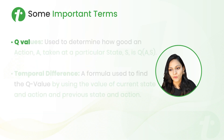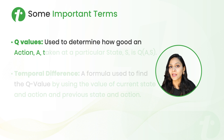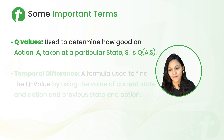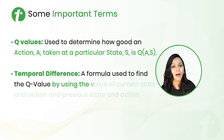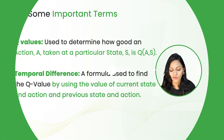Next is Q-values. Q-values are used to determine how good an action A taken at a particular state S is, and it is represented as Q(A, S). Next is temporal difference — a formula used to find the Q-value by using the value of the current state and action and the previous state and action.